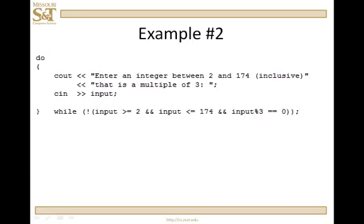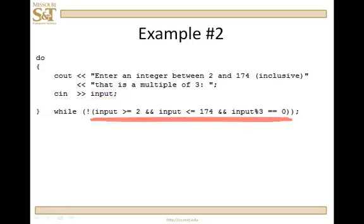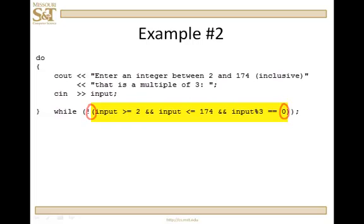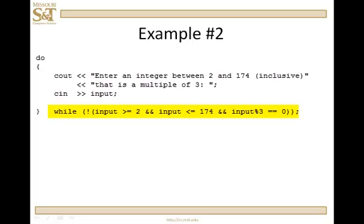Example 2: enter an integer between 2 and 174 inclusive that is a multiple of 3. The loop control variable is 'input' — here is the prompt, here is the initialization and update, and here is the check. I've written the condition as the negation of what I want: what I want is input >= 2 and input <= 174 and input mod 3 == 0 — meaning input is divisible by 3, the remainder is 0. It's easy to state what I want and then simply negate it. If that negation is true, I don't have what I want and I re-prompt. That's our condition as a post-check loop.